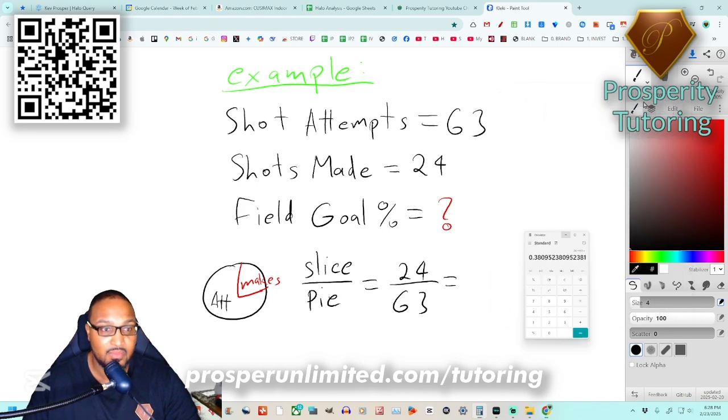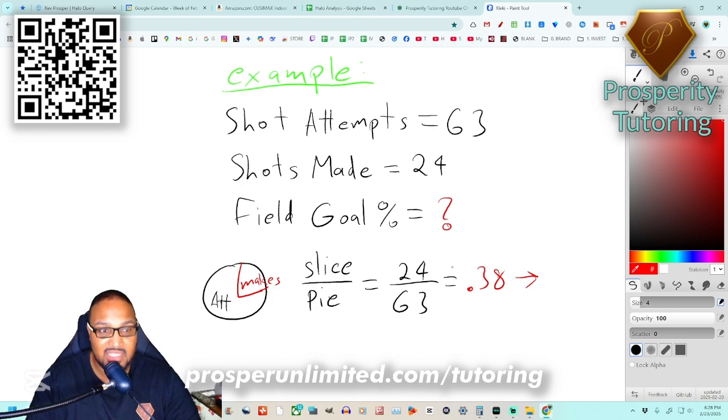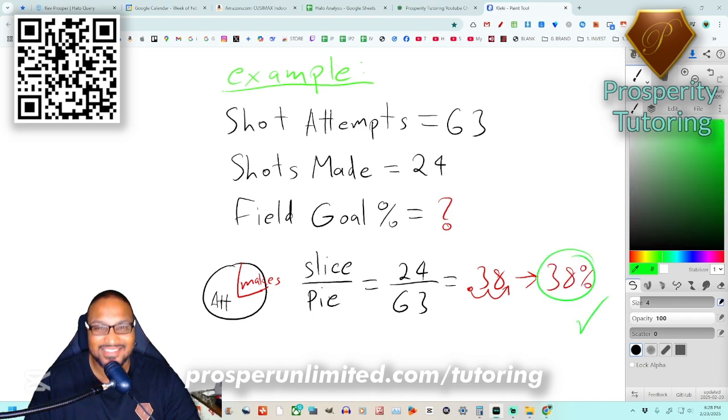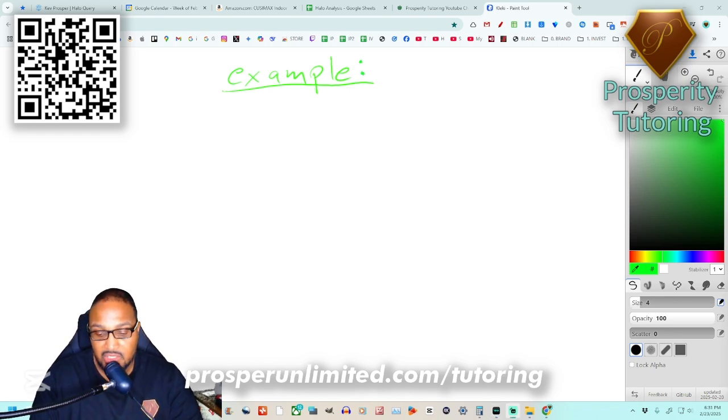That will give us point three eight. Now what is point three eight as a percent? Remember we're changing a decimal to a percent so we multiply by a hundred or we can move the decimal two spaces forward and that gives us thirty-eight percent.